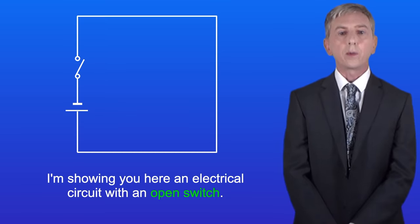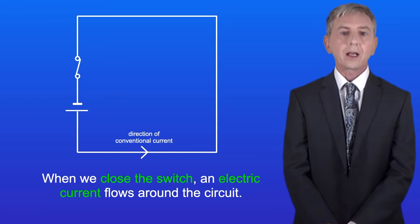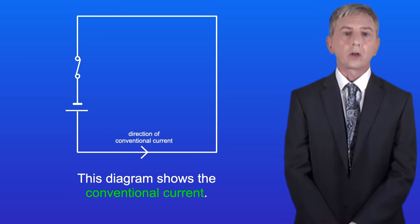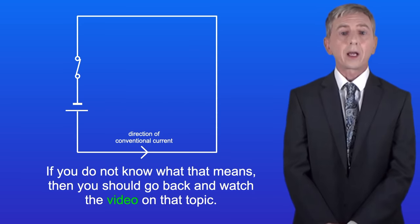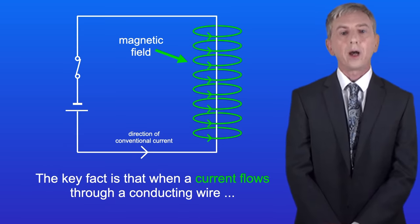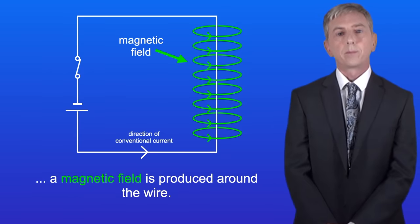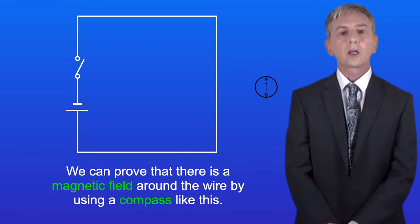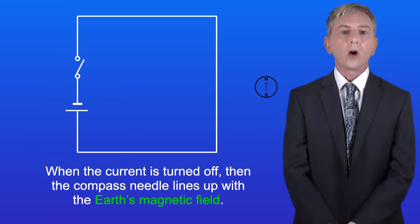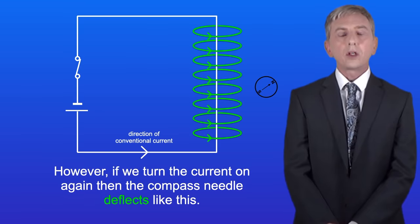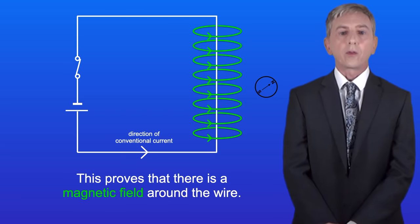I'm showing you here an electrical circuit with an open switch. When we close the switch an electric current flows around the circuit. This diagram shows the conventional current — if you don't know what that means then you should go back and watch the video on that topic. The key fact is that when a current flows through a conducting wire a magnetic field is produced around the wire. We can prove that there's a magnetic field around the wire by using a compass. When the current is turned off the compass needle lines up with the Earth's magnetic field. However, if we turn the current on again then the compass needle deflects, and this proves that there's a magnetic field around the wire.